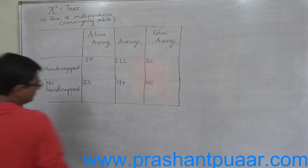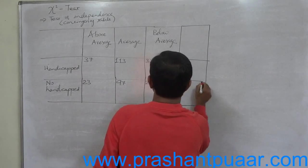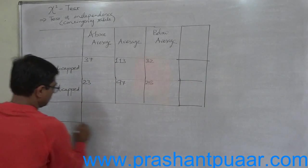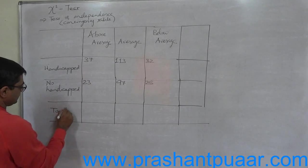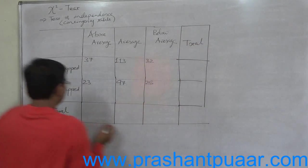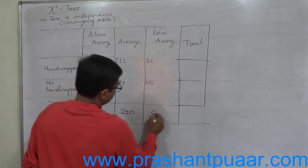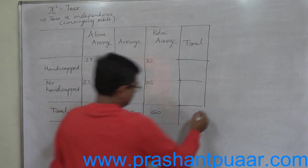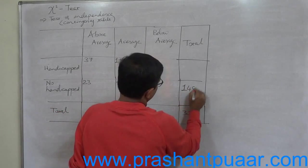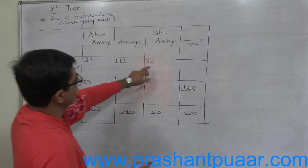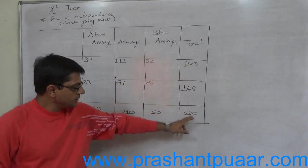To test this hypothesis, first we have to do something with this data. First find out the total of both the rows and columns. We have to prepare one additional column and one additional row in the form of total. The total of the first column is 60, the total of second column is 210, and the total of the third column is also 60. So the grand total comes to 330. It is 148 for the second row and 182 for the first row.